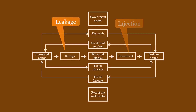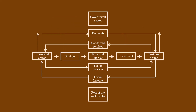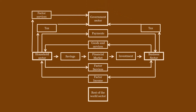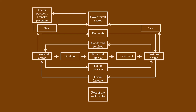The household sector and the business sector are taxed by the government sector — this is the leakage. The household sector provides factor services, and the household sector receives factor income. The government makes transfer payments to the household sector.